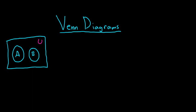In this first picture, A and B have no elements in common. That's what this picture is telling us — they have no elements in common. One way to say that is that they are disjoint sets. Two sets are disjoint if they have no elements in common.